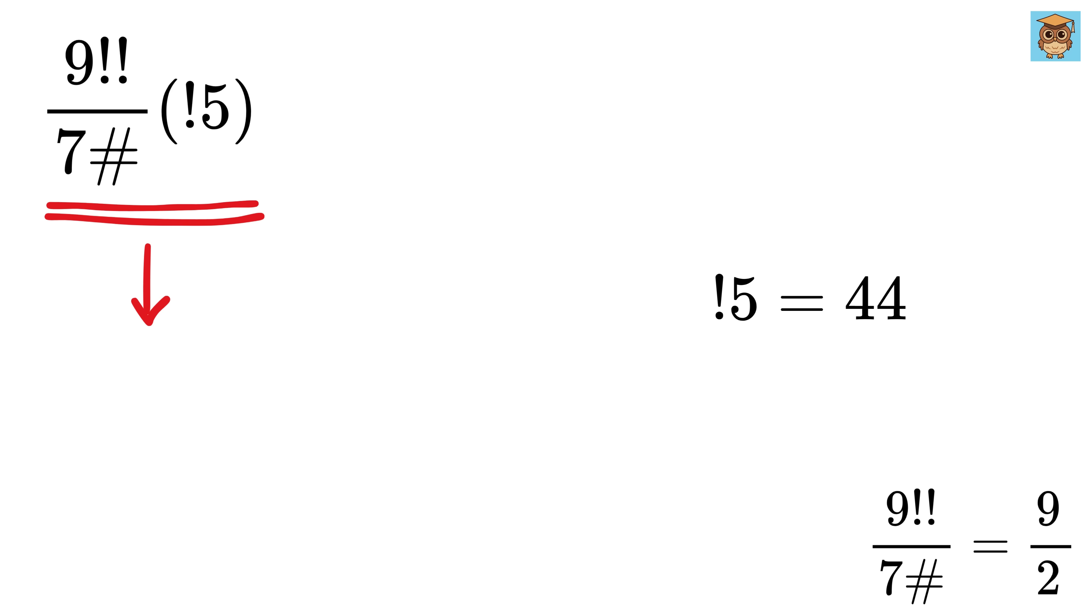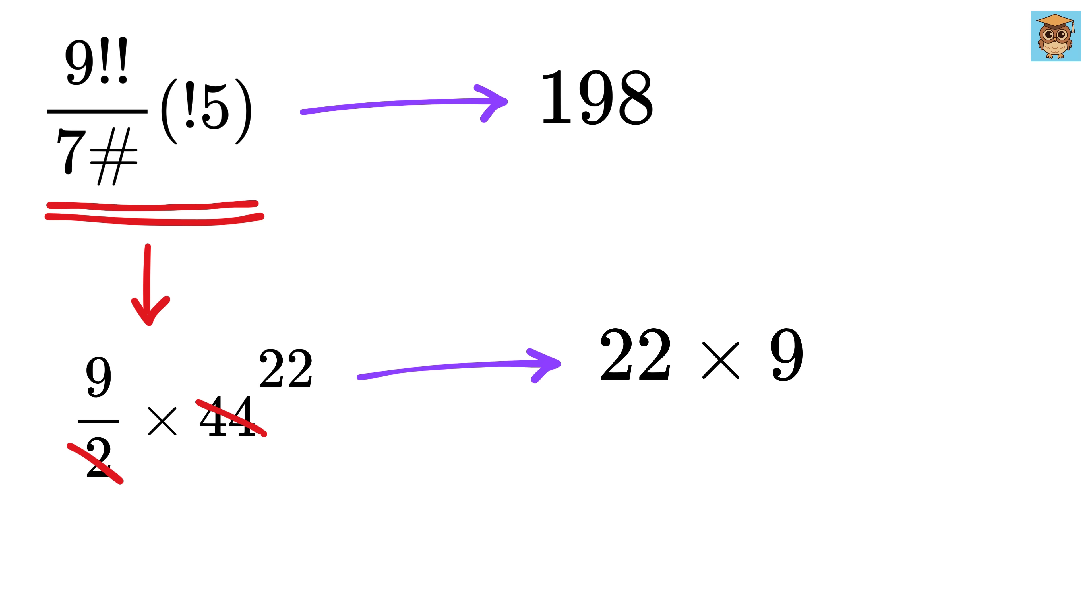Finally, multiply this 44 with this 9 over 2. This will become 22 and we have 22 times 9, which is 198. So the value of this weird operation is 198.